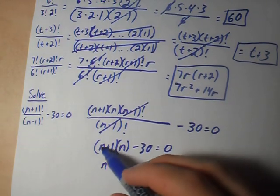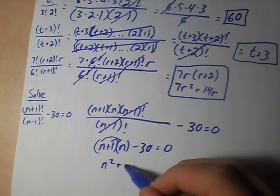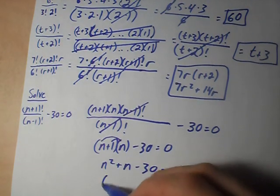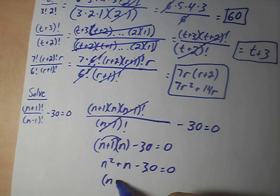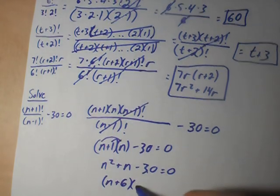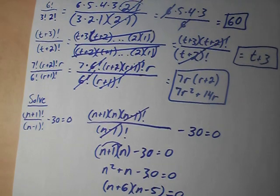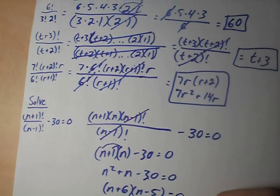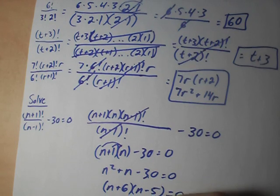So N squared — we multiply the terms out — N² + N − 30 = 0. And if we factor that to get two numbers that multiply to get −30 and add to get 1, we get (N+6)(N−5) = 0. So if we set each of these to 0: N+6=0 and N−5=0, we get N=5 and N=−6.